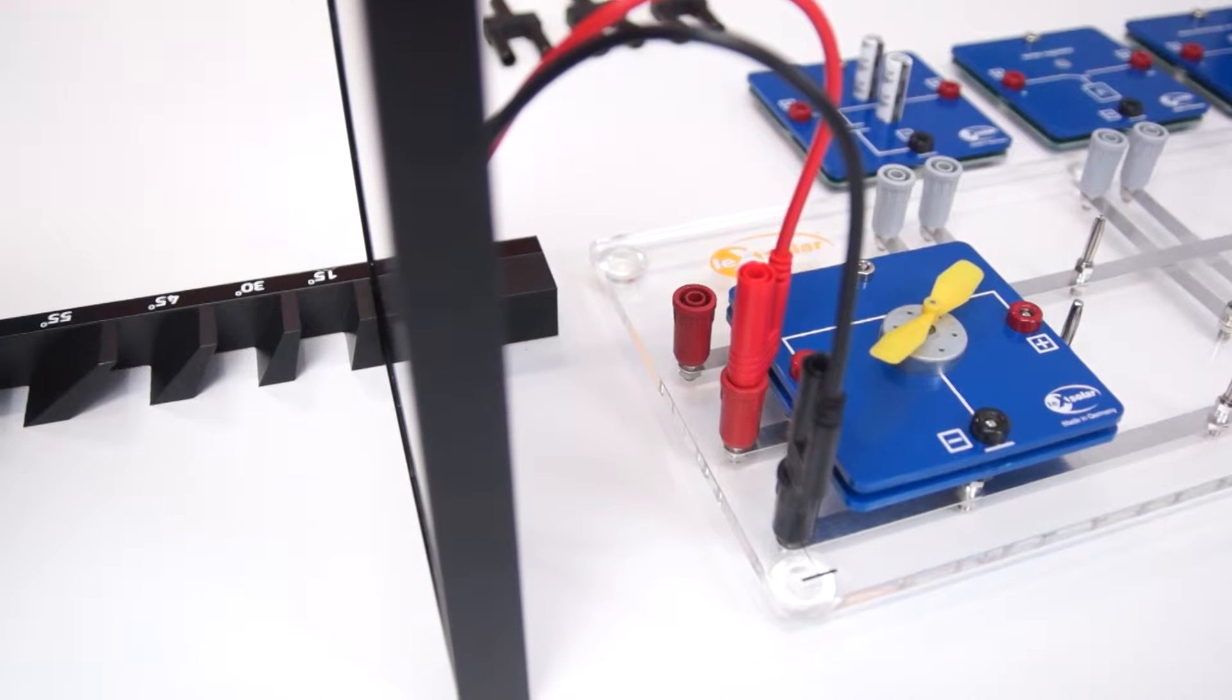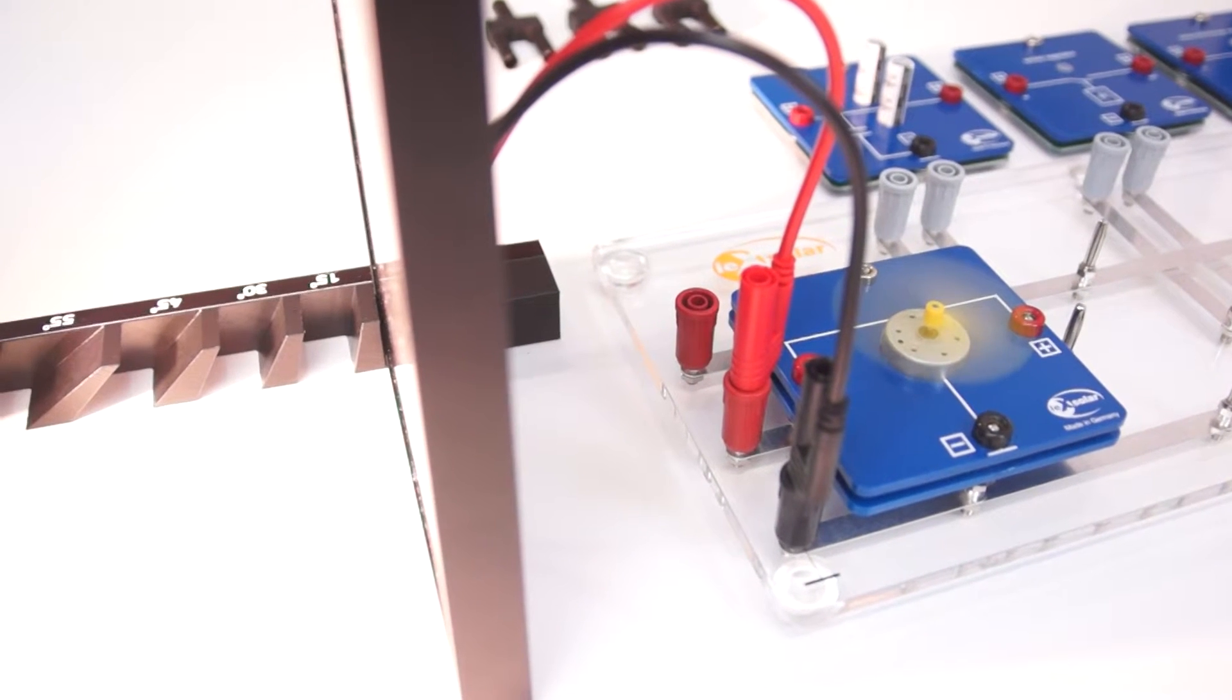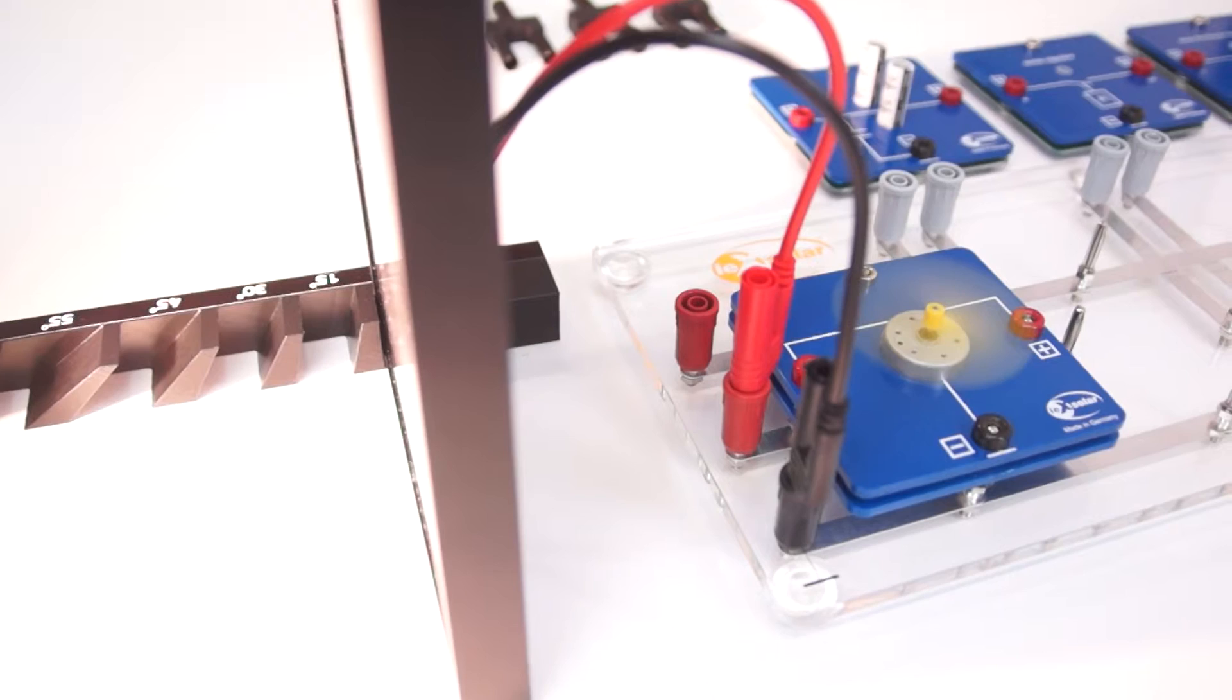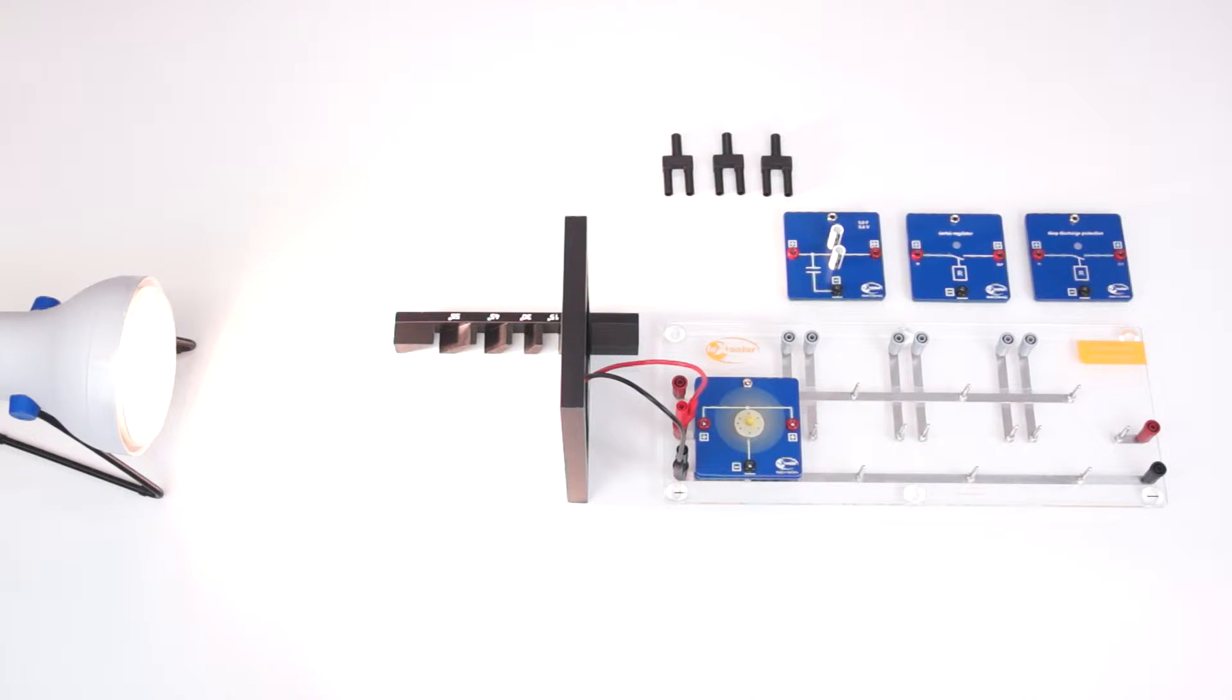If we turn on the lamp, the illuminance on the solar module is so high that the power generated drives the motor. If we turn off the lamp again, the motor stops turning.